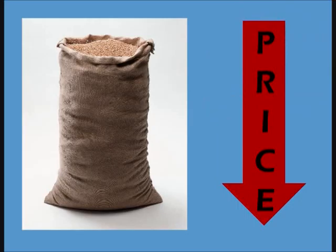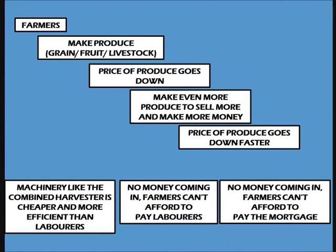And it dropped even further when, in an attempt to make more money, farmers began producing even more goods. This meant they did not have enough money to pay the mortgage for their land. It was even worse for labourers who worked on other people's farms, who found themselves being replaced by cheap machinery. However, it is important to note that these problems only affected the small farmers — large farms at this period of time did well.